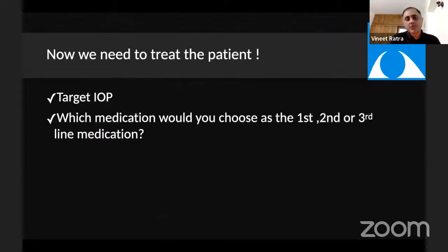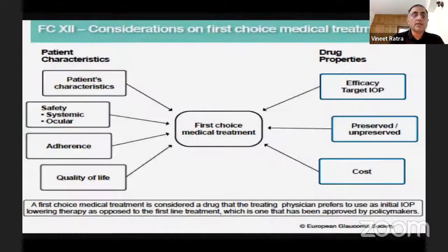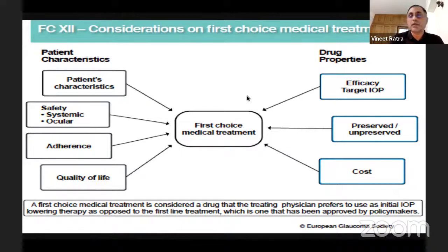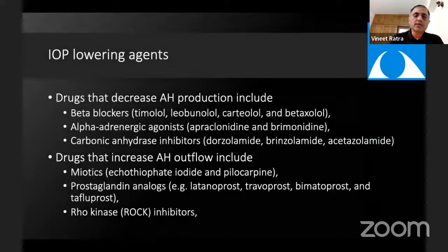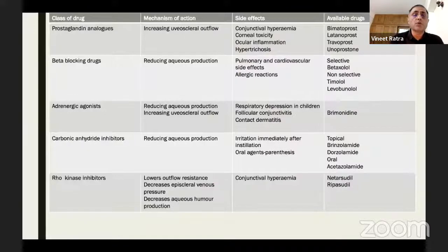Which medications would one generally use as first line, second line, or third line? This depends on both the patient's characteristics and the drug properties — the systemic and ocular safety profile, the adherence and compliance of the patient, willingness to use medications multiple times a day, the efficacy of the drug relative to the target IOP, and the cost. One could use drugs that decrease aqueous humor production, drugs that increase aqueous humor outflow, or drugs which do both — each with different mechanisms of action and different side effects.